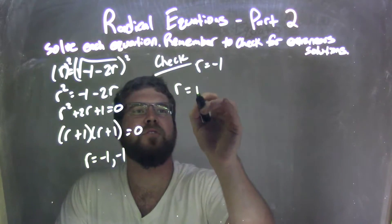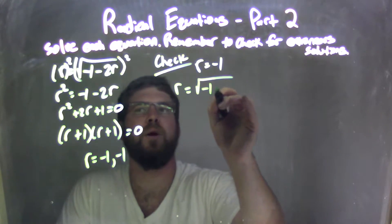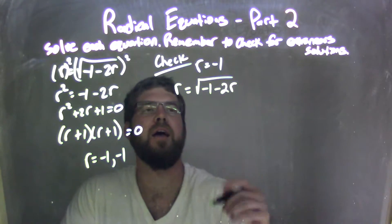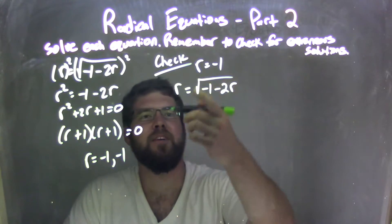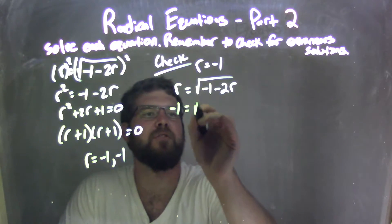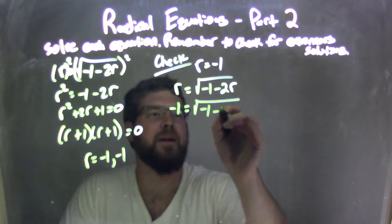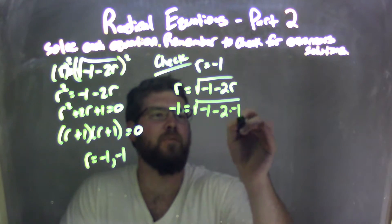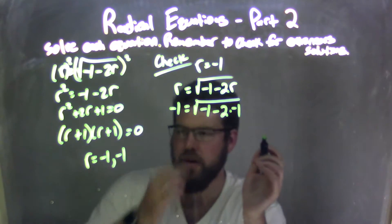r equals negative 1. Let's check it into our original equation and see if we have an extraneous solution. So if r equals the square root of negative 1 minus 2 times r, I'm going to plug just one of them in, negative 1 in. So I have negative 1 equals the square root of negative 1 minus 2 times a negative 1. Now be careful here with our negatives.